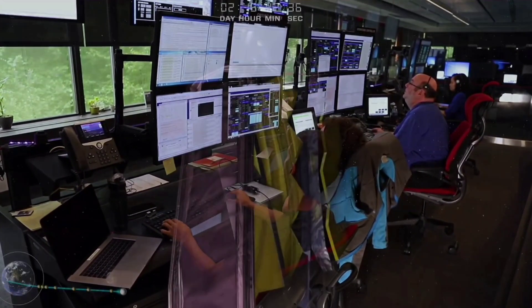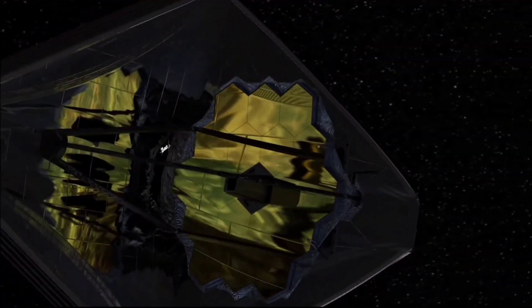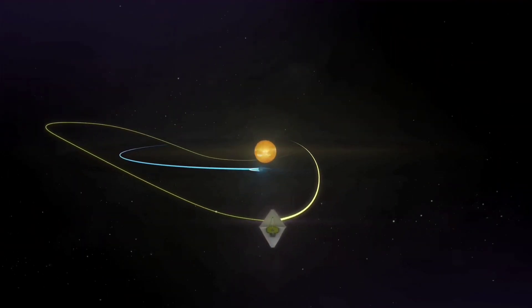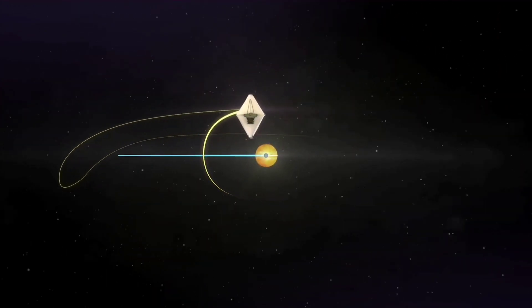Engineers still need to analyze the raw data collected by Webb during the burn to confirm precise details of the maneuver, as this burn was the first to use the observatory's station keeping thrusters that will also help keep it in a stable orbit while at L2.